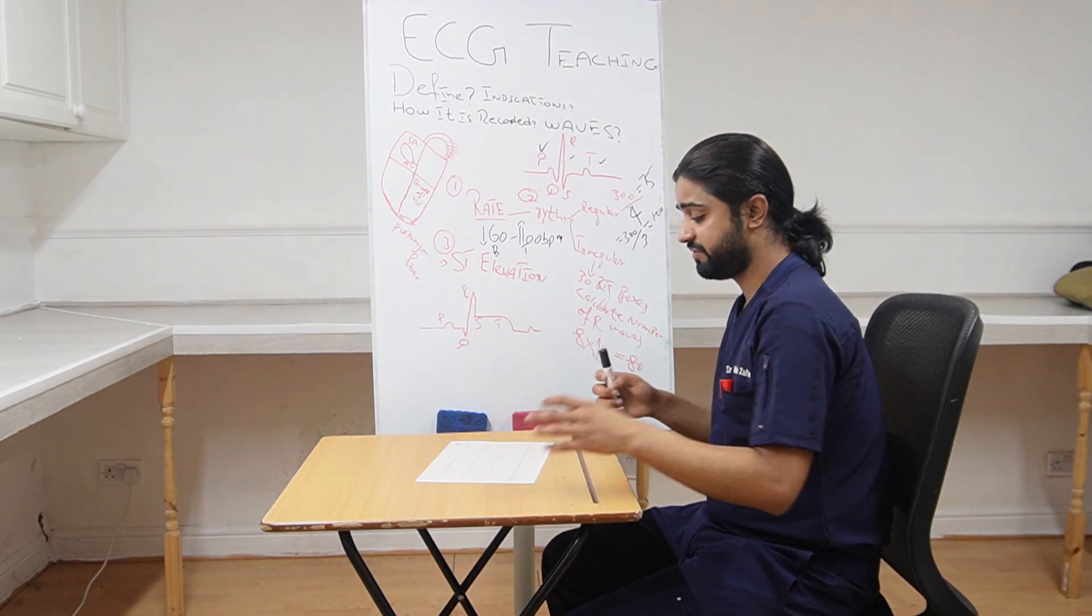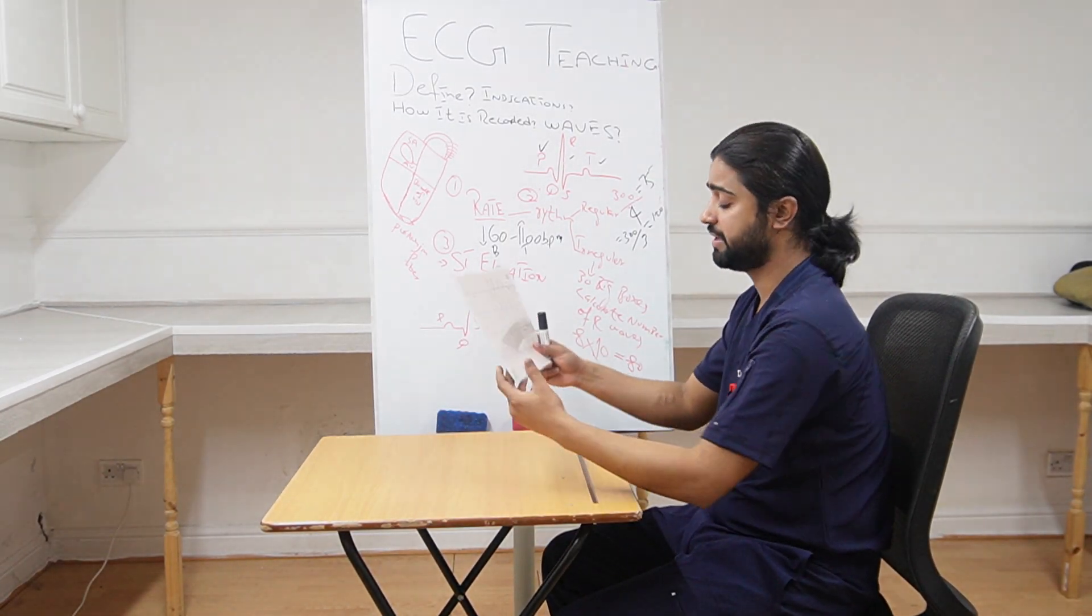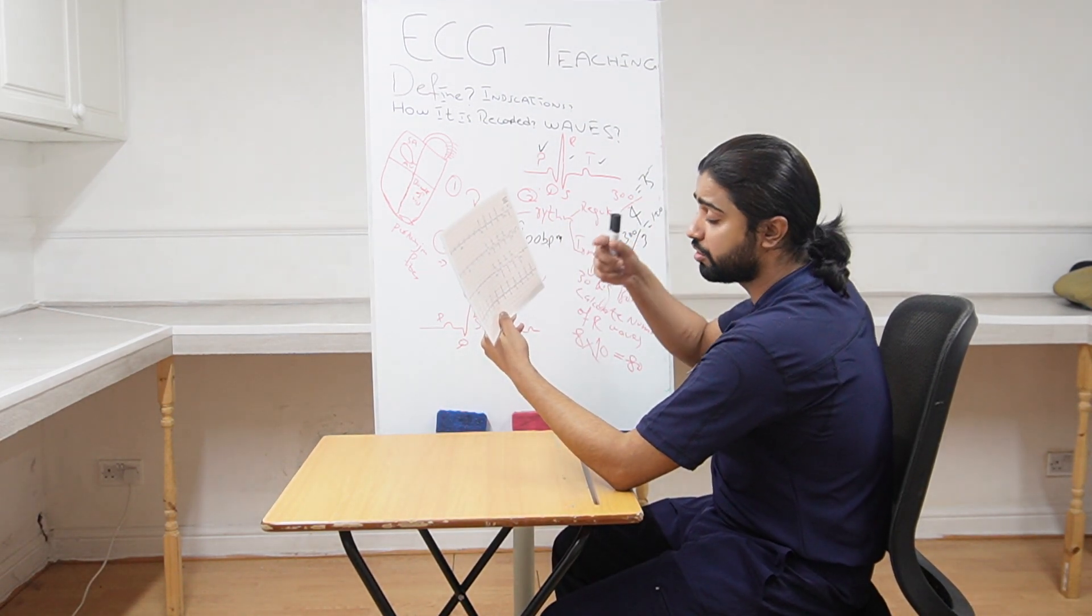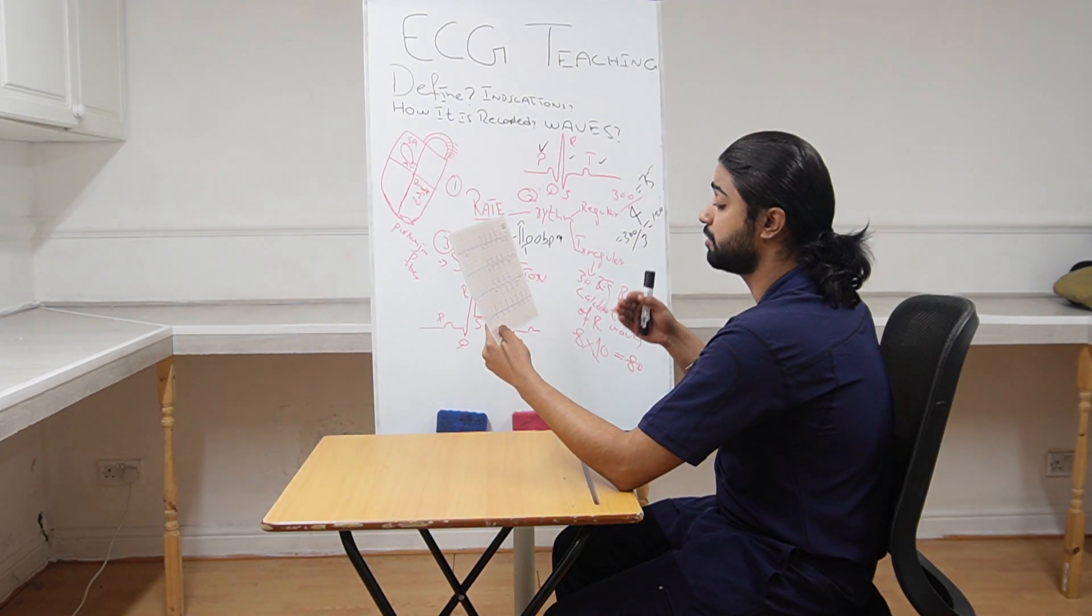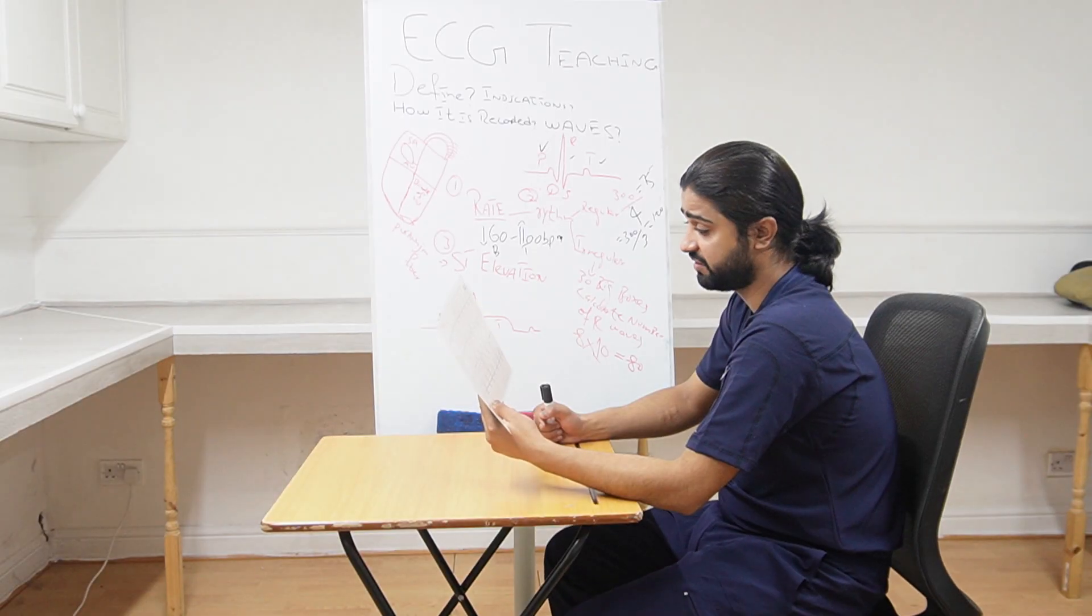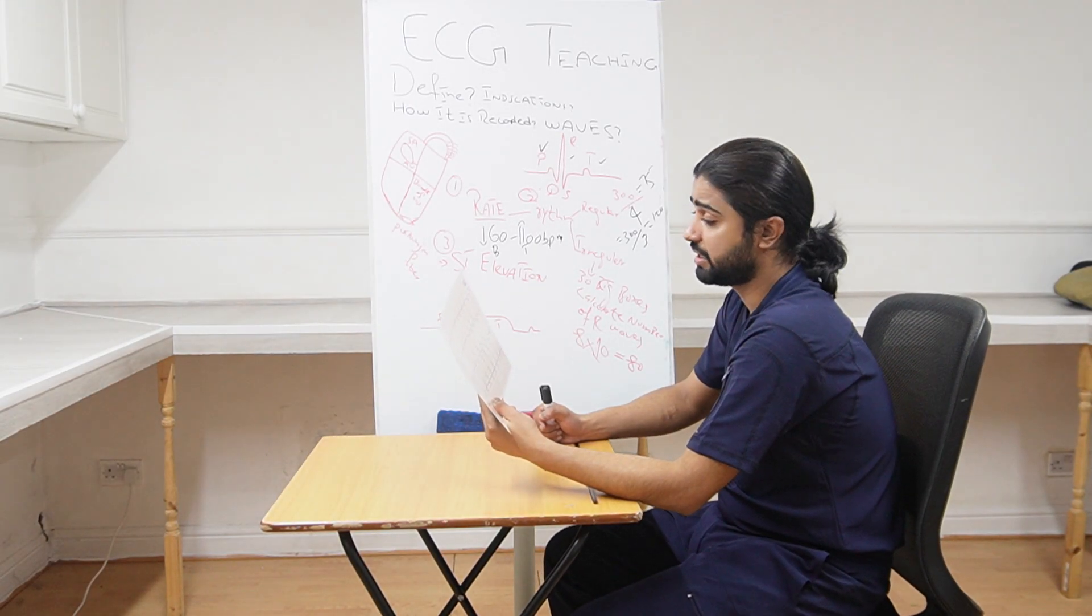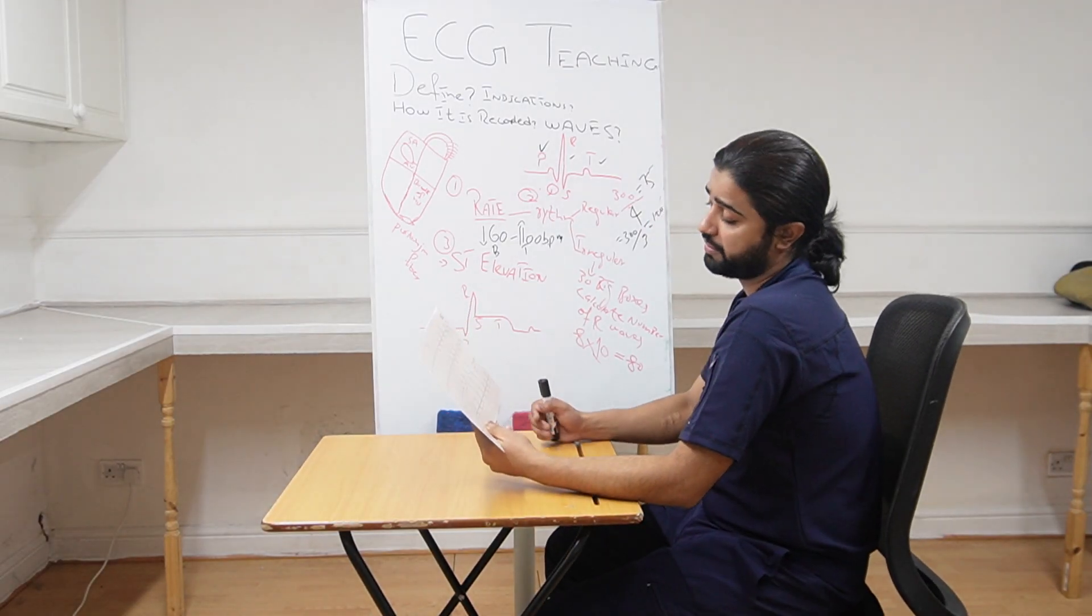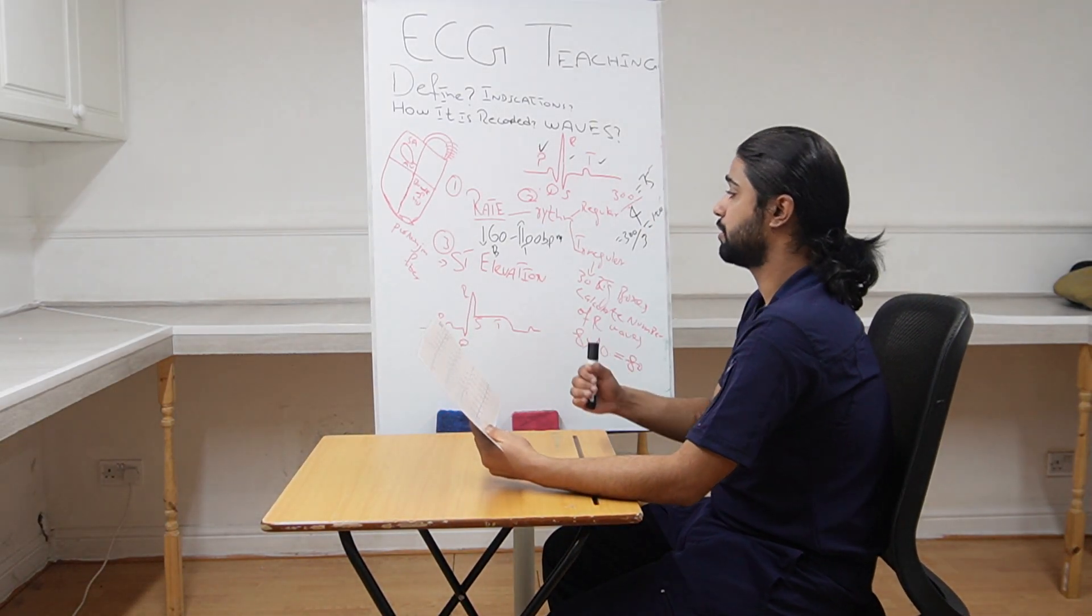So next, doctors, if rhythm is irregular. Simply, when you place the paper and the distance between two R waves is not the same, it means rhythm is irregular and this could be an emergency as well. There might be something abnormal going on, something serious. So you need to inform your senior, patient might need emergency treatment. So if rhythm is irregular, then how to calculate the rate?